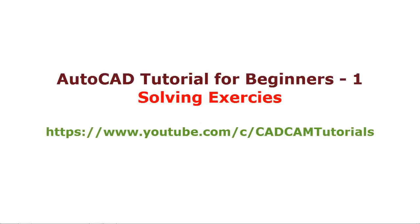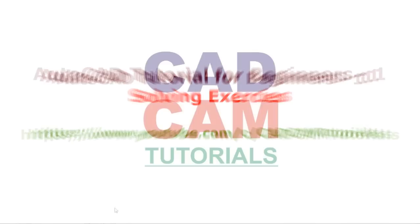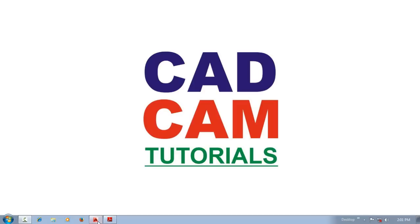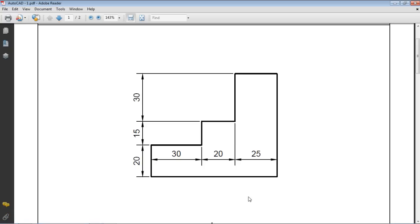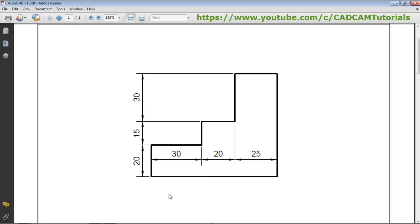In this video we are going to perform some exercises based on what we learned in the previous tutorial. We are going to create this object where the total length is 30 + 20 + 25 = 75.